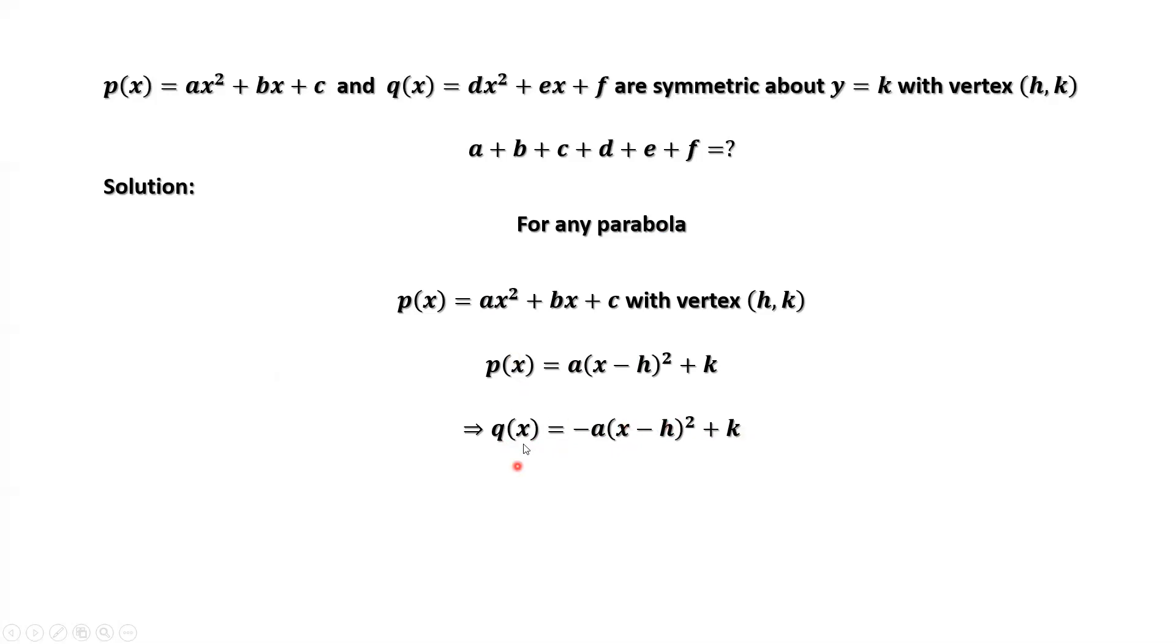The two parabolas are symmetric with respect to this horizontal line y equals k. The difference in P of x and Q of x is the value A. Here should be negative A. If A is positive, this function, the parabola is concave up and this one should be concave down. It should be negative A.